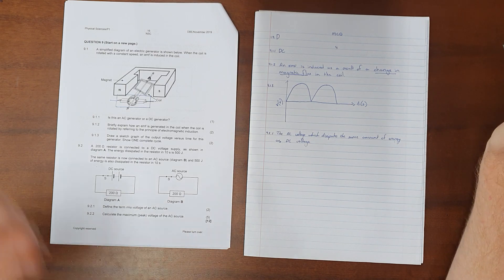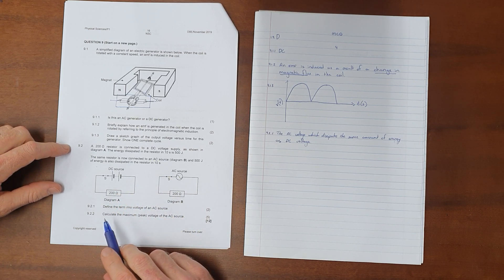Question 9.2, related to alternating current, reads: A 200 ohm resistor is connected to a DC voltage supply as shown in diagram A. The energy dissipated in the resistor in 10 seconds is 500 joules. The same resistor is now connected to an AC source, and 500 joules is also dissipated in 10 seconds.